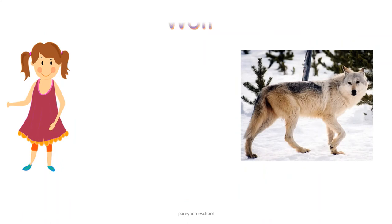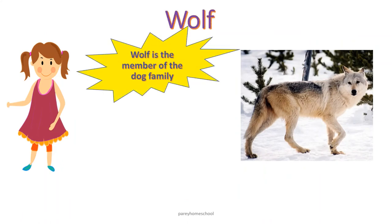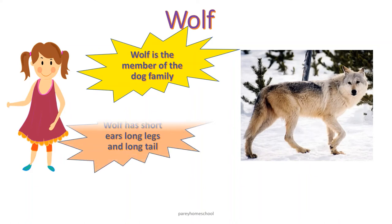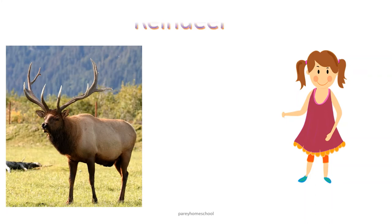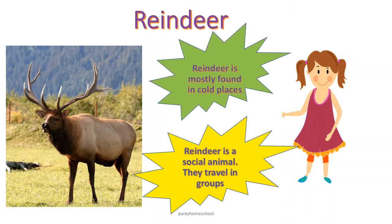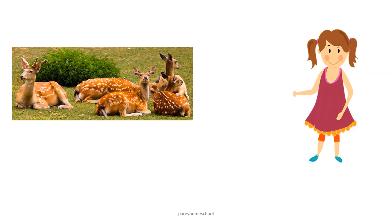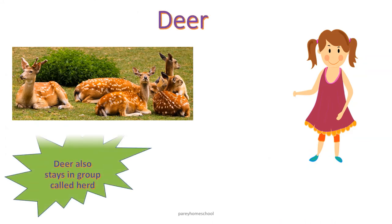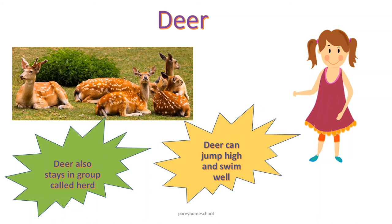This is wolf. Wolf is a member of the dog family. Wolf has short ears, long legs and long tail. This is reindeer. Reindeer is a social animal. They travel in groups. Reindeer is mostly found in cold places. This is deer. Deer also stays in groups like a herd. Deer can jump high and swim well.